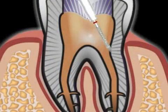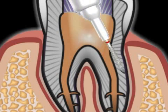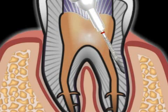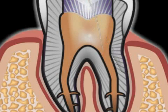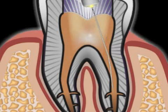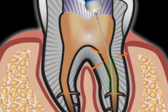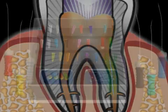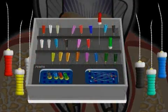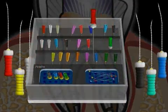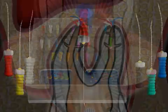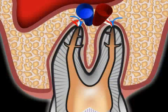Other complications during root canal treatments are the perforation of the canal or the crown of the tooth, usually resulting in an extraction of that tooth. The previously mentioned instrument break is a complication that is not rare, but it may be prevented if the instruments are exchanged on a regular basis.